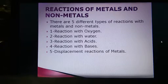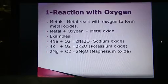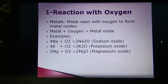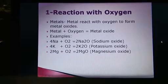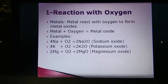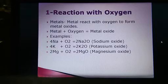First, reaction with oxygen. When a metal reacts with oxygen, the formula is: metal plus oxygen gives metal oxide. All metals make their oxide when they react with oxygen. For example, sodium is a metal and reacts with oxygen to make sodium oxide — Na₂O, sodium oxide.